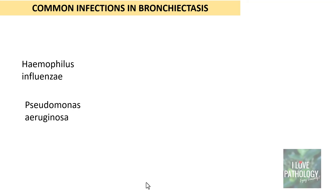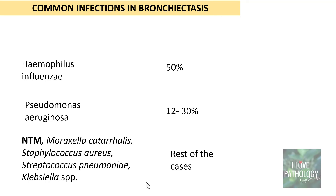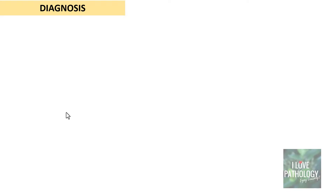The most common organisms causing infections in bronchiectasis are Haemophilus influenzae and Pseudomonas aeruginosa. Haemophilus influenzae constitutes around 50% of cases and Pseudomonas aeruginosa around 12 to 30% of cases. The remaining cases can be due to non-tuberculous mycobacteria, Moraxella, Staphylococcus aureus, Streptococcus pneumoniae, and Klebsiella species.